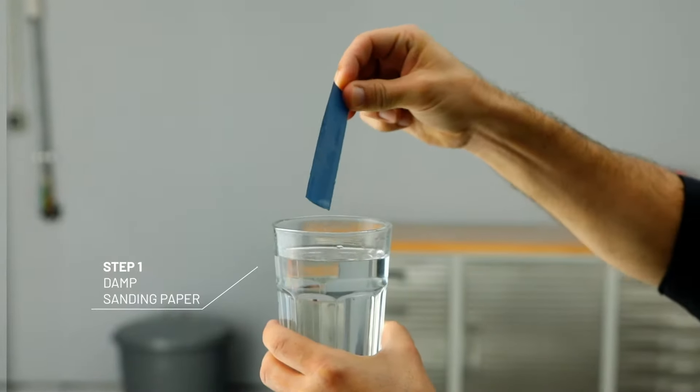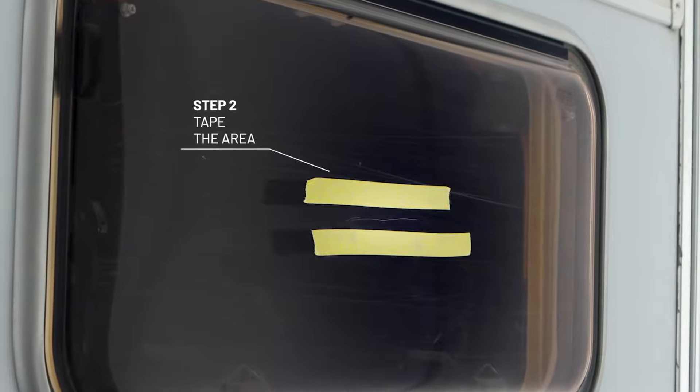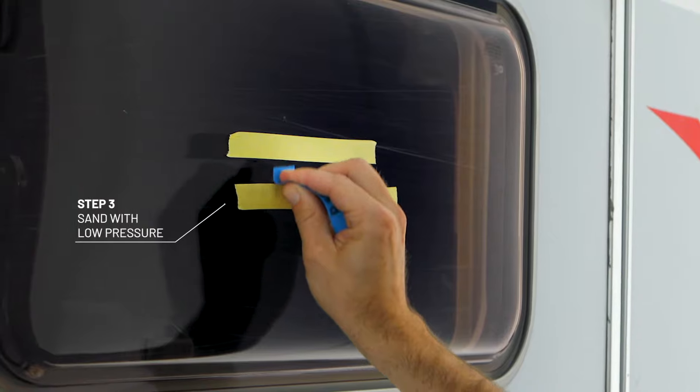And here we go. First, damp the 1500 grit sanding paper. Tape. And wet sand the scratched area with the 1500 sanding paper.